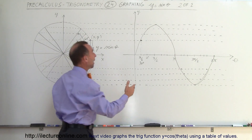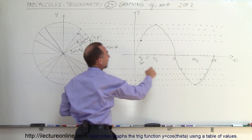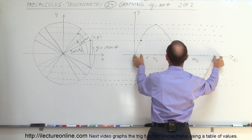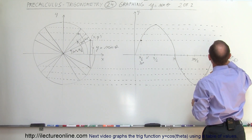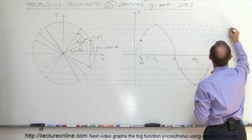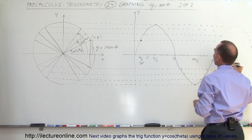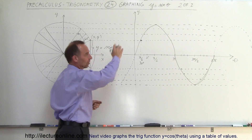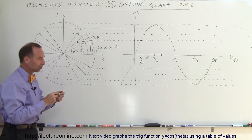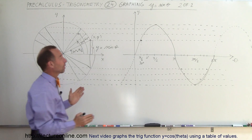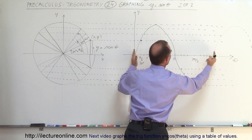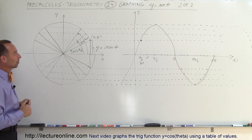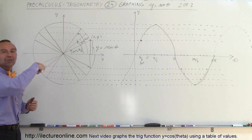Now if you continue past 2pi, the whole thing starts over again. The next point would be 30 degrees past the 2pi value, and you go back up and the function simply continues as it did before in both directions. So you can see that it's an endless, infinite graph in both directions. We usually talk about the function between 0 and 2pi, but of course it repeats infinitely in both directions as you continue going around the unit circle forever.